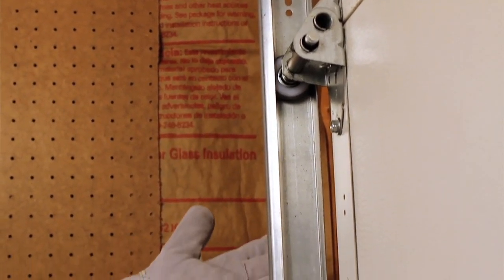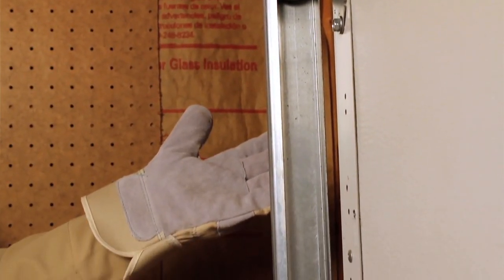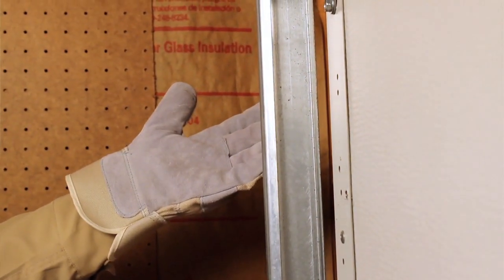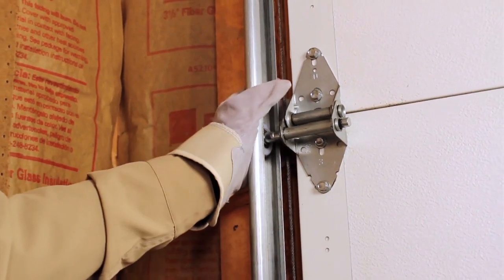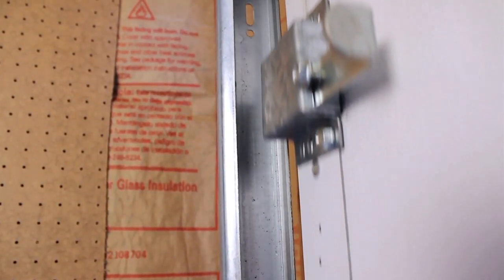Another visual inspection you can perform is to look at the track. Make sure that it's secure and in line. You also want to check the cables to make sure they are not frayed. Also make sure that the rollers run smoothly up and down the track.